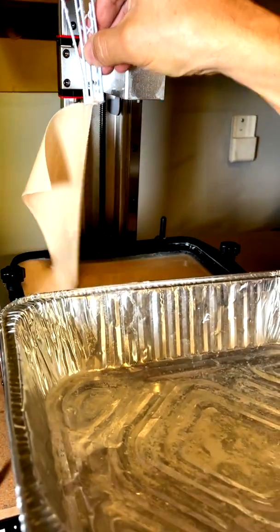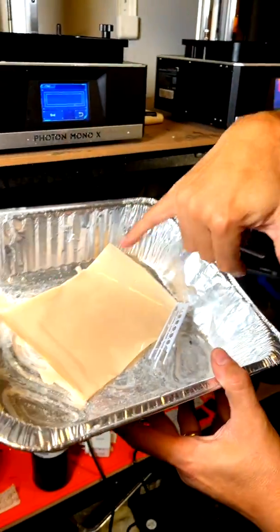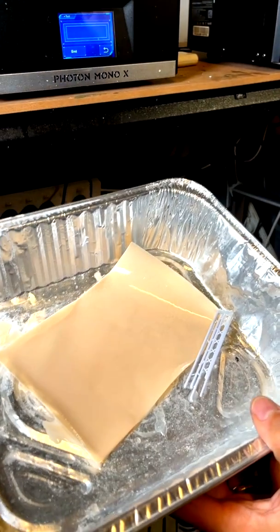You just drop it straight into the tray. Job done. So if there's any bits of debris, you'll see them attached to that cured surface and your vat's clean now.